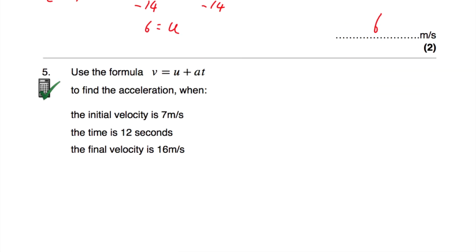Question number 5 is a calculator question. We've been asked to use v equals u plus at to find the acceleration. The initial velocity is 7 metres per second — that's u. The time is equal to 12 seconds. And the final velocity, v, is equal to 16 metres per second.